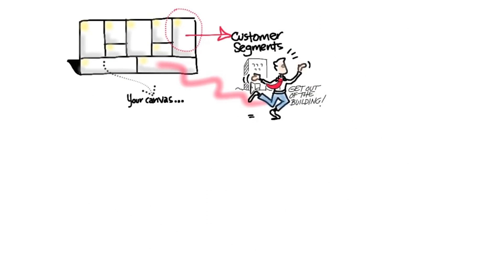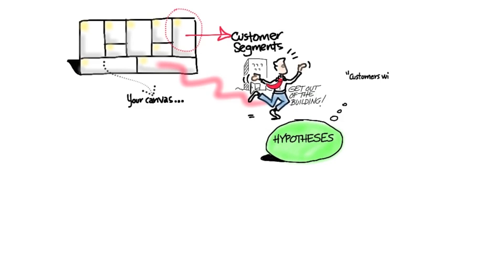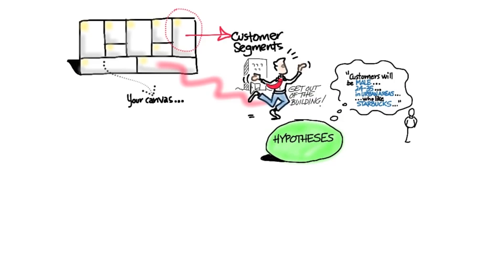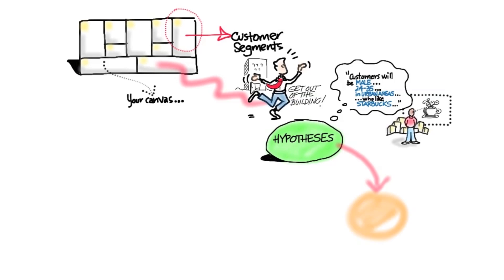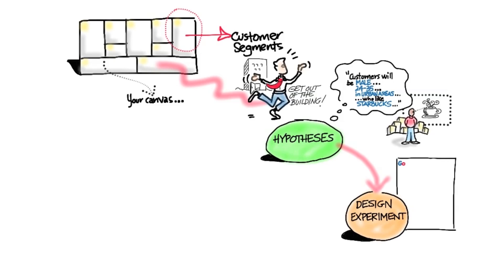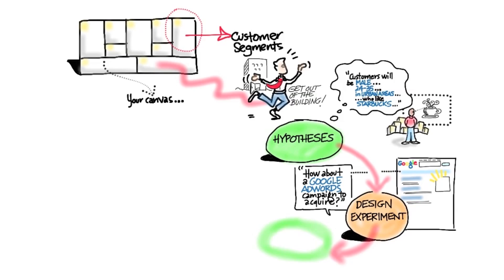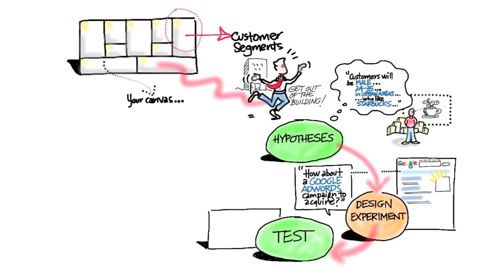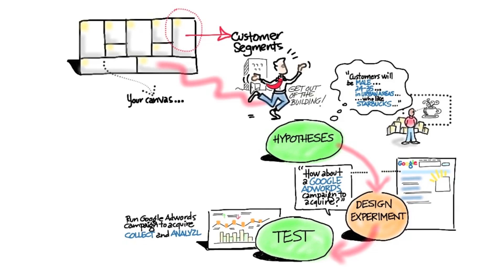What you're doing outside the building is starting with specific hypotheses. For example: the customers will be male, 24 to 35, living in urban areas. Then you design experiments — maybe a Google AdWords campaign, or if it's a physical product, go out and meet them personally. Run some tests, analyze the data, and look at whether the results match the hypotheses.